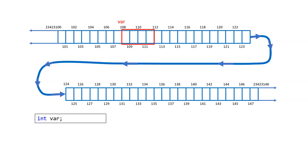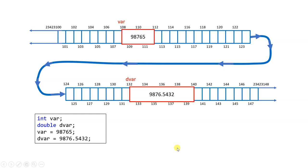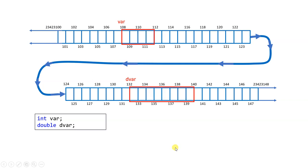Whenever we create a variable, it gets placed at a specific address in that character array. If you have an integer, four of those bytes are going to be set — so it's going to be at address 108 in this example. If you create another variable it's going to sit somewhere else based on where the compiler and operating system find it fit, and when you put a value inside the variable, it actually sits inside, covering all four bytes.